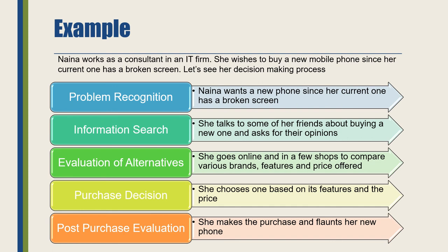Stage five, post-purchase evaluation: after purchasing the phone, the general tendency is to flaunt it — sharing its features with others — but more importantly, once you start using the product, you tend to give feedback to parents, friends, or relatives in some form. Post-purchase evaluation involves actually using the product and seeing for yourself how it works. This example illustrates what a consumer thinks through during the decision-making process when buying a product or service.